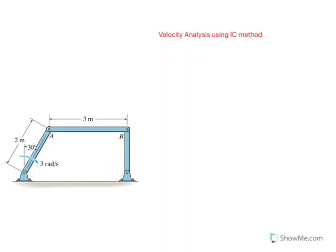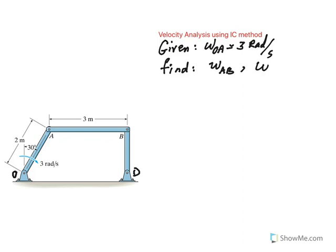Here we are given this link, I'm going to call this point O, link OA, given omega of OA to be 3 radians per second at this instant. We want to find at the instant shown, we want to find omega of link AB and omega of link, for lack of any other letter, we call it D. We want to find omega of these two links at this instant using the IC method.